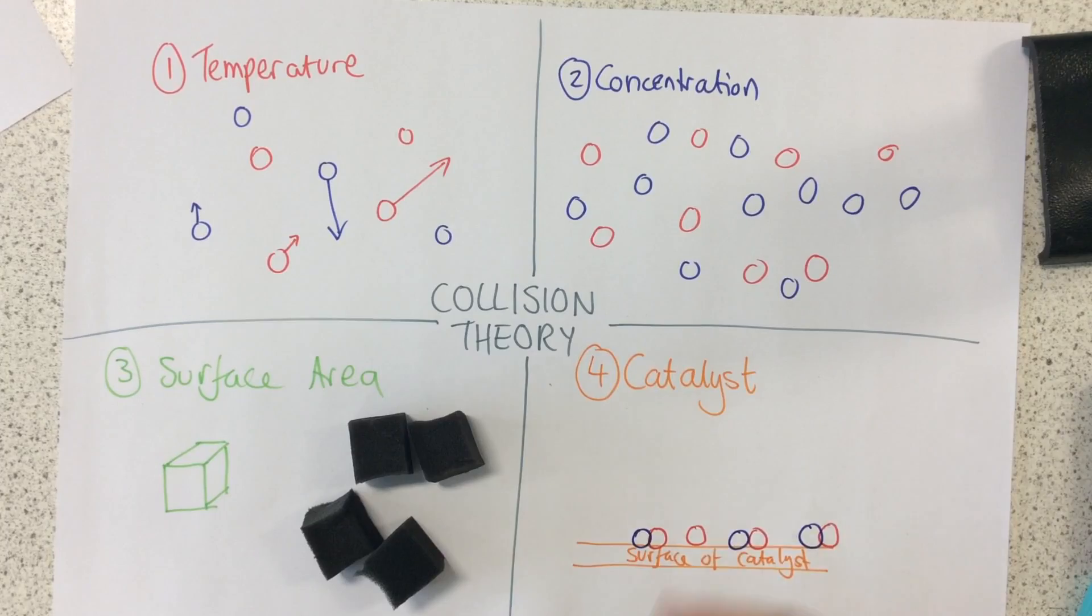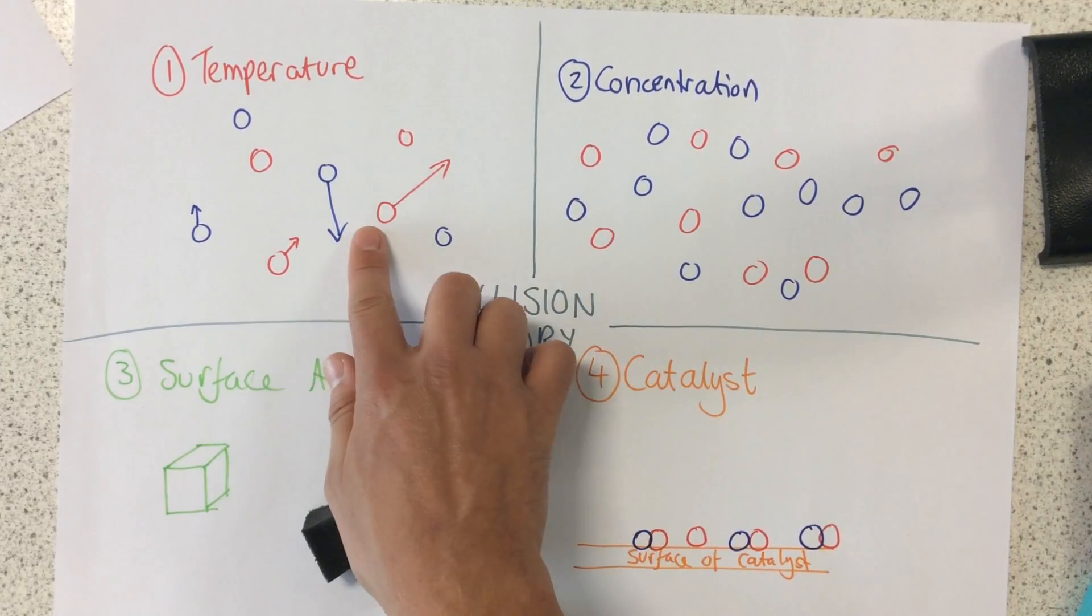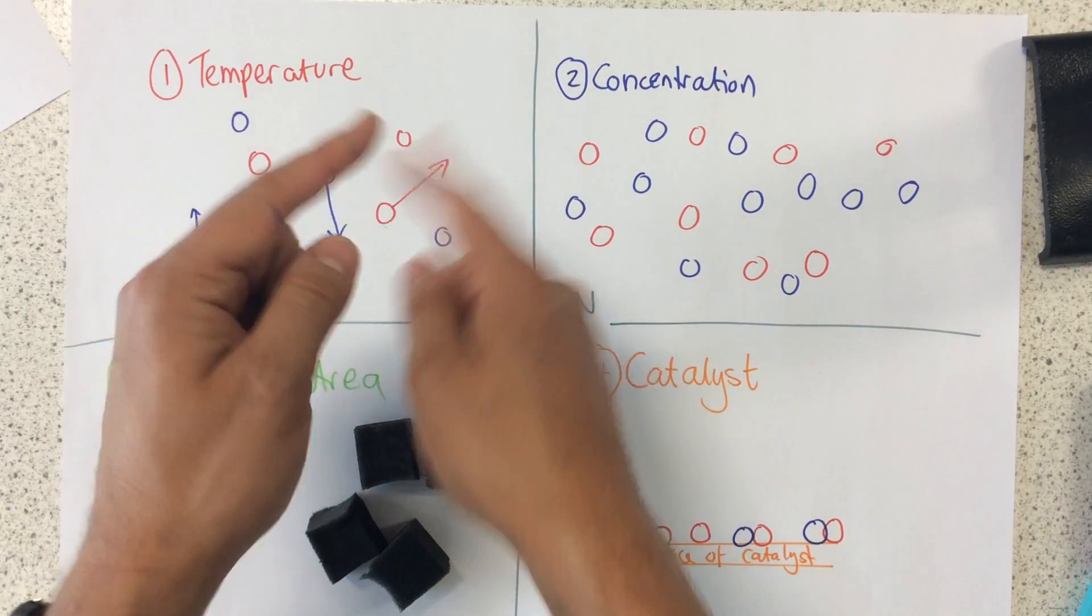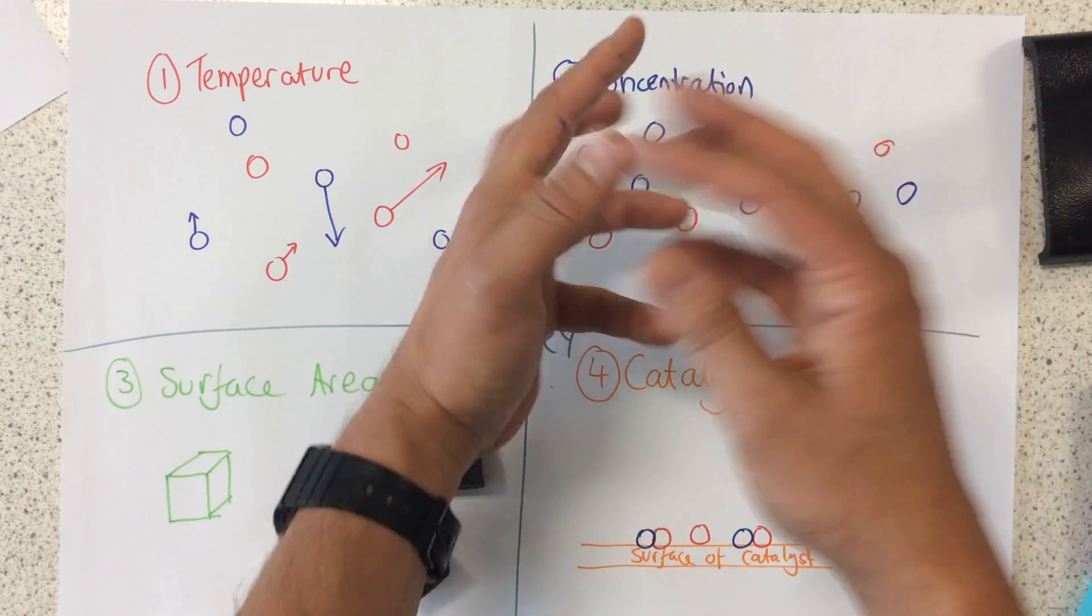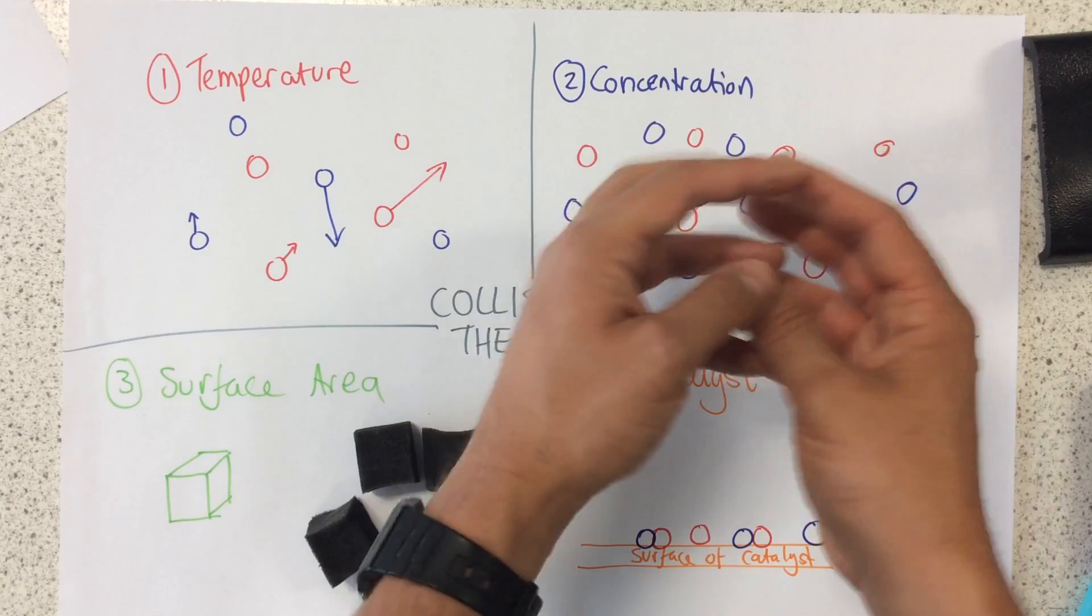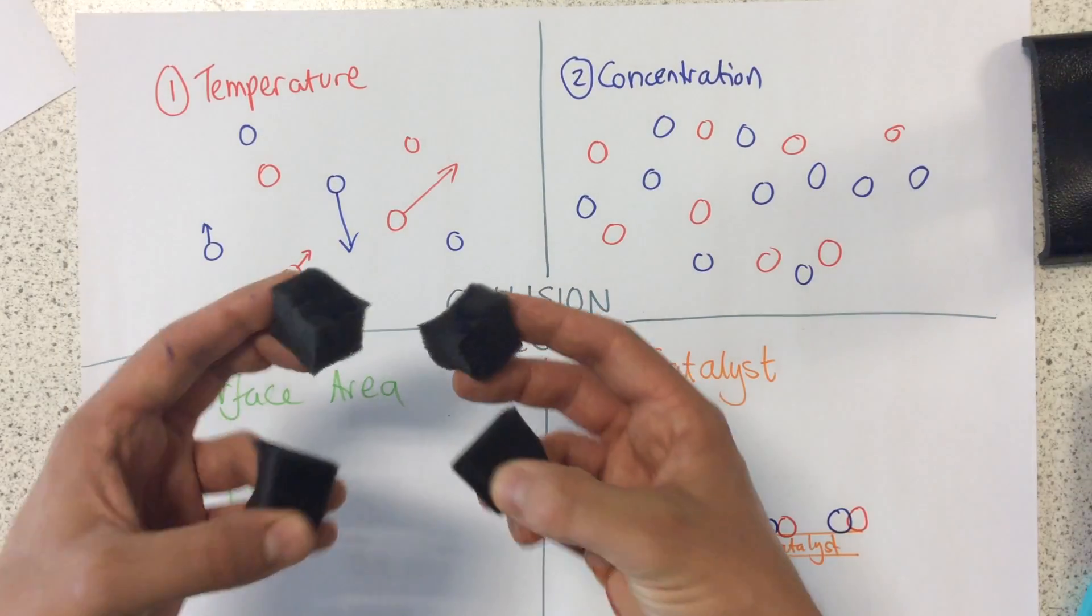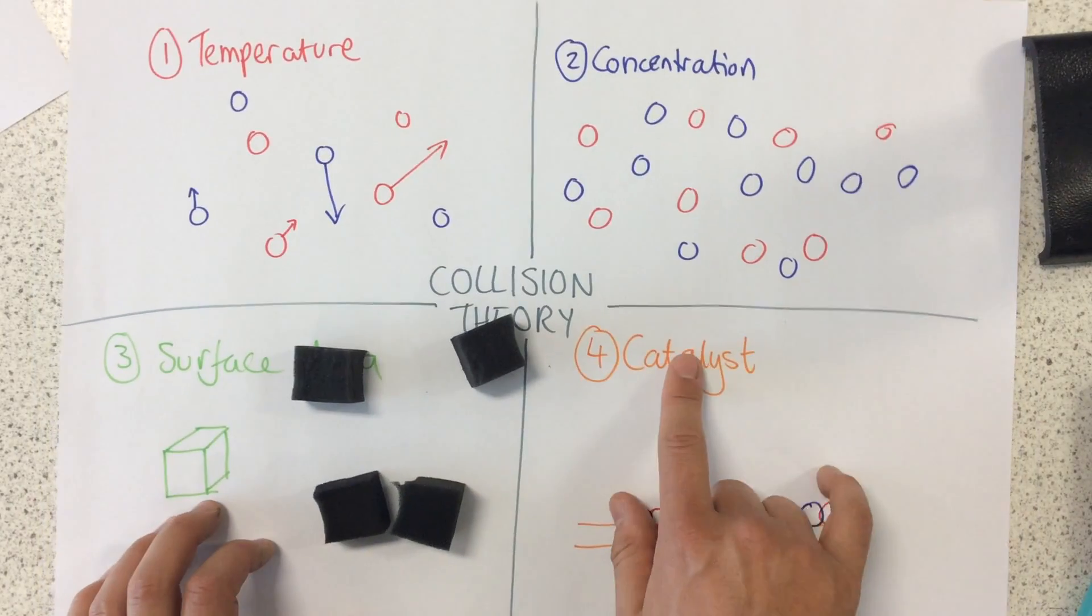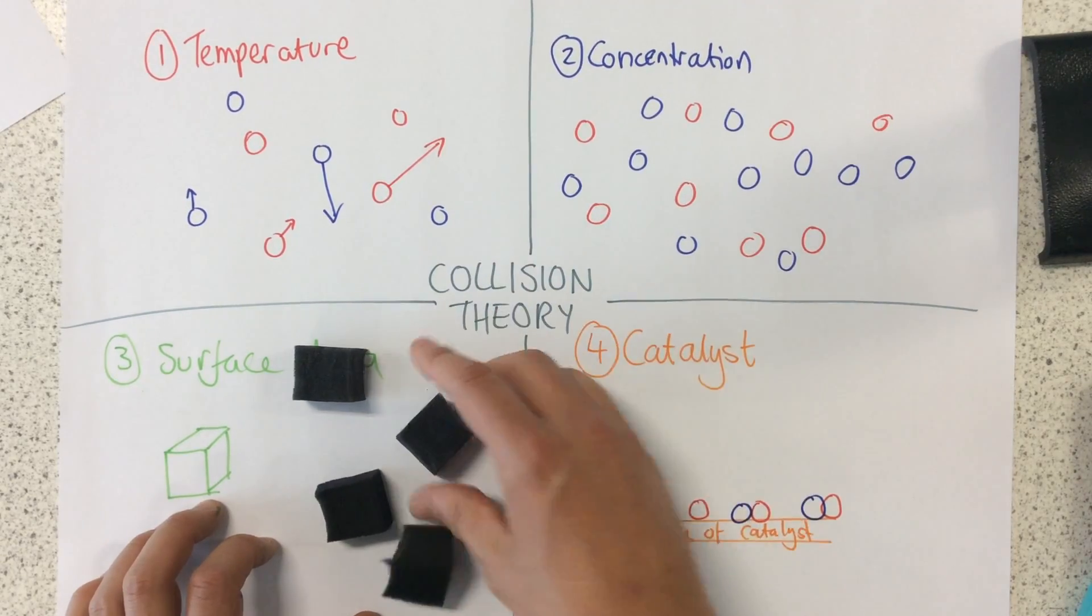So those are the four different things we need to know about collision theory. The greater the temperature, the faster the particles move, so there's more collisions and a faster rate of reaction. The higher the concentration, the more particles there are in that volume, the more collisions there are, the faster the rate of reaction. The greater the surface area, the greater the rate of reaction. And by having a catalyst, we provide a surface which also speeds up the rate of reaction.